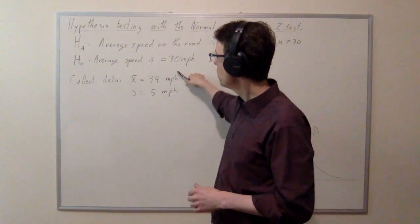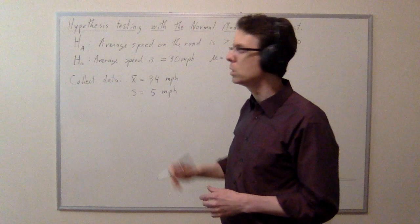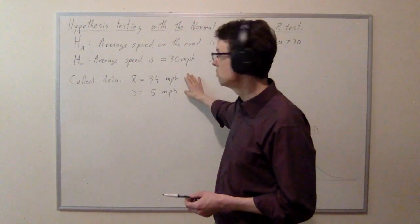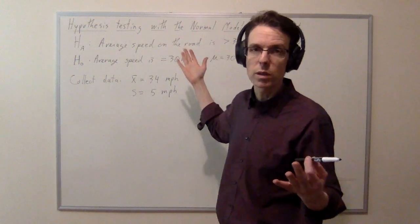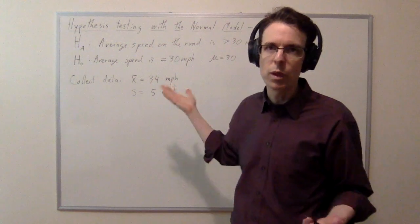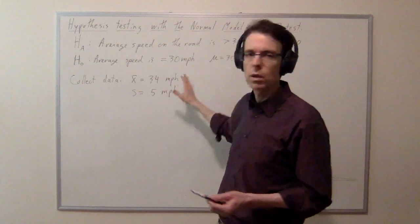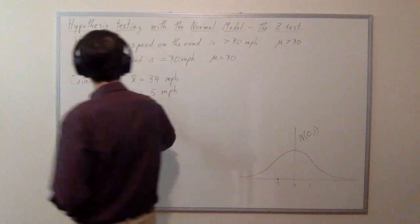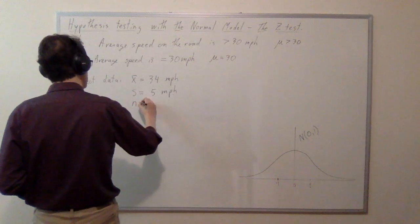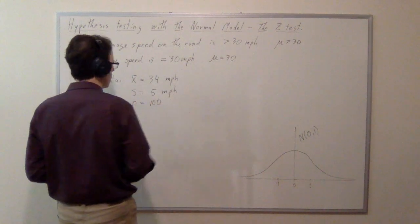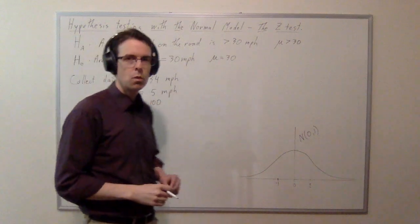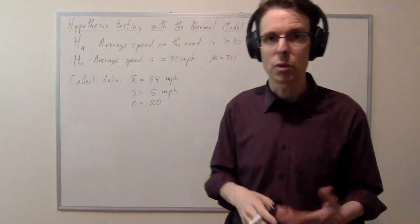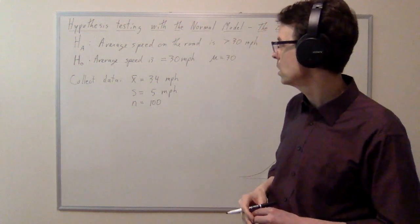One more thing we need to know is the sample size. If the sample size is 2, what are we even doing? If it's a million, we've got a lot of data. Let's put the answer somewhere in between — let's say n = 100. The symbol n means the sample size, not the population size.